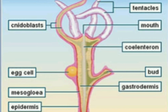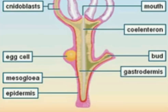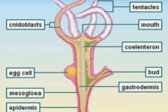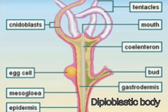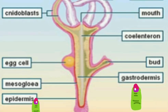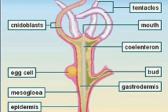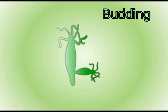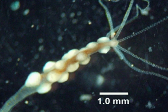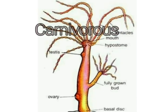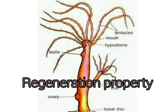The proximal end is flat and attached to the substratum, known as the basal disc or foot. The body wall is diploblastic, made up of two layers of cells: outer epidermis (ectoderm) and inner gastrodermis (endoderm) lining a central cavity. Between them is a jelly-like non-cellular layer called mesoglea. Hydra reproduces asexually by budding. Gonads like testis and ovary are seen as small bulges in the middle of the body. Hydra is carnivorous and has the power of regeneration.